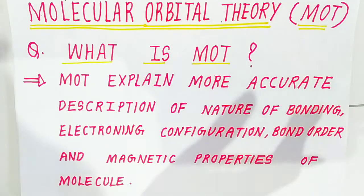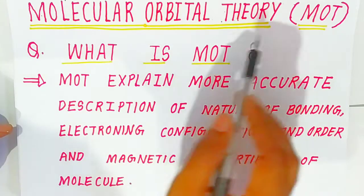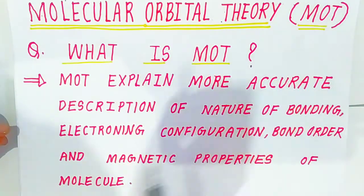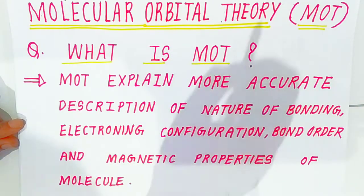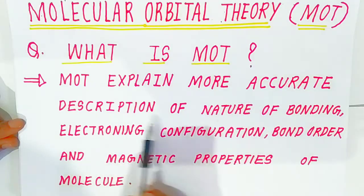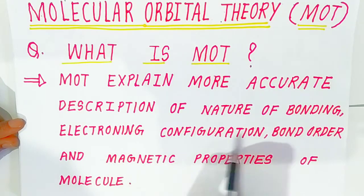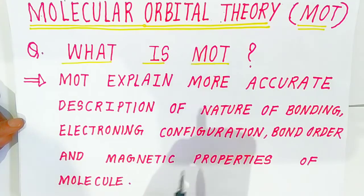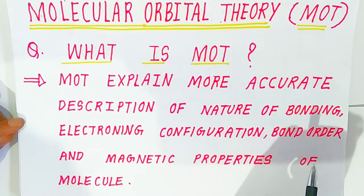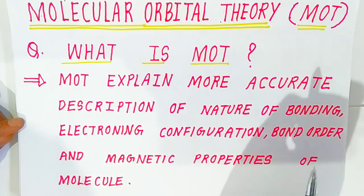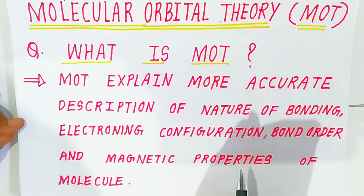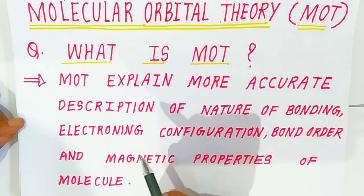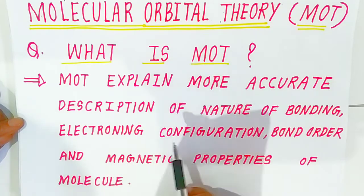Hello students, welcome to Bholanath Academy. Today we are going to see the Molecular Orbital Theory, in short called MOT theory. MOT explains a more accurate description of the nature of bonding, electronic configuration, bond order, and magnetic property of molecules. So far we have seen the valence bond theory, and now we are going to explain these properties at the molecular level.